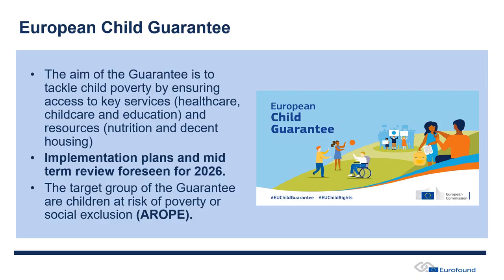What is the Child Guarantee? It's a recommendation established in June 2021, and its role is to tackle child poverty by ensuring access to specific services — namely healthcare, childcare, and primary and secondary education — and also ensuring access to resources such as nutrition and decent housing. As part of its implementation, member states were supposed to appoint child guarantee national coordinators overseeing the measures in their country, brought together in a national action plan.